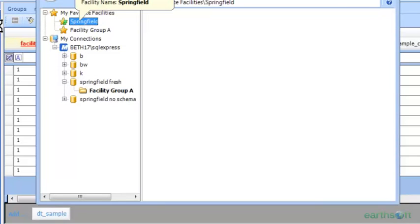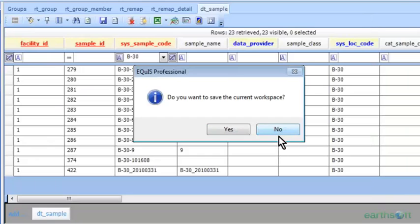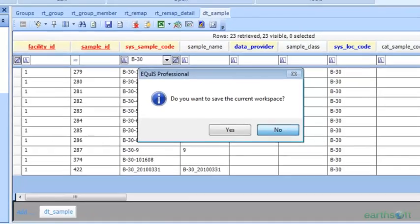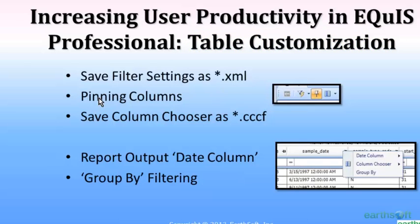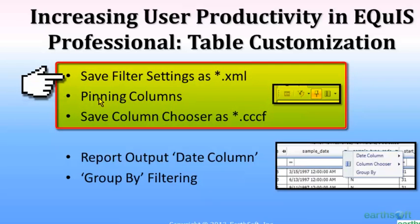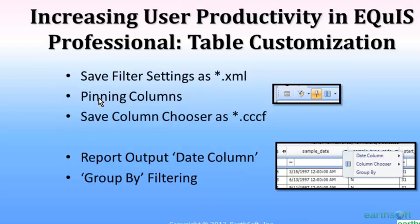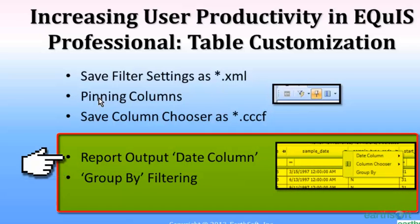We're going to look at tables and customizing your table views — how you want to see them with only the data you want, and saving that view to come back to later. We're going to look at three icons on the minibar: the filter, the pin, and the column chooser. Then we'll look at report output where you can create a new date column with a customized date format, and also look at group-by filtering.